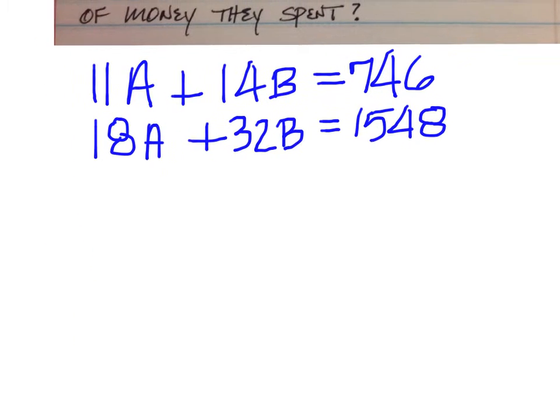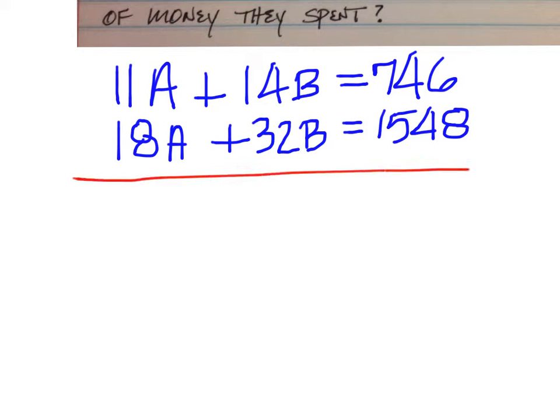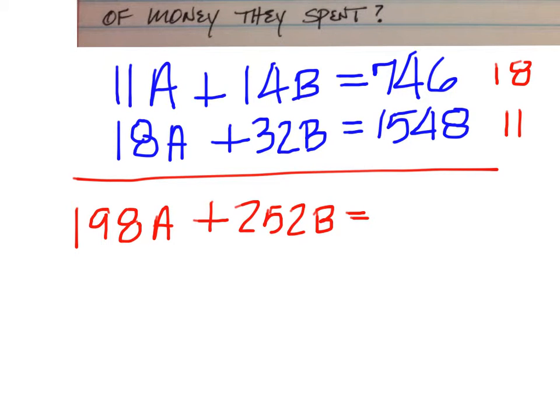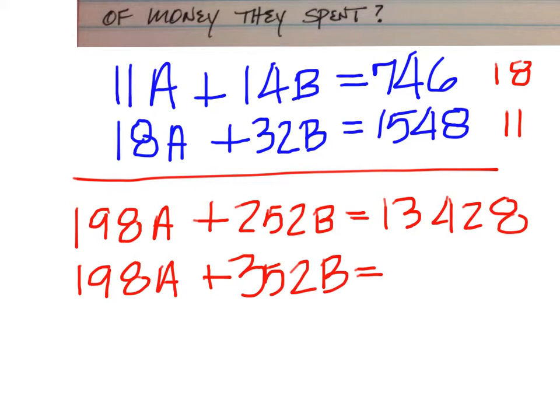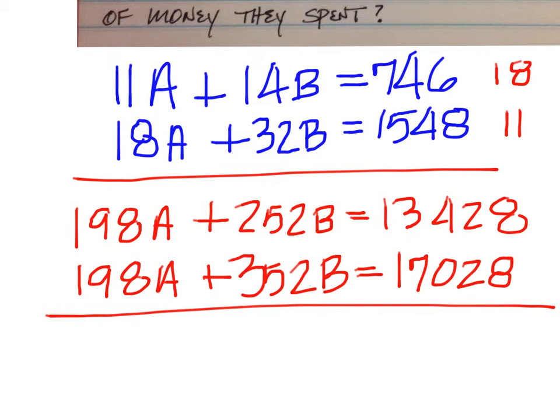You can do substitution or elimination. I am going to get the same number for the A's by multiplying by 18 on the top and then by 11 on the bottom. So 18 times 11 is 198A plus 252B equals 13,428. On the bottom, multiplying by 11, you'll get 198A and then plus 352B equals 17,028.